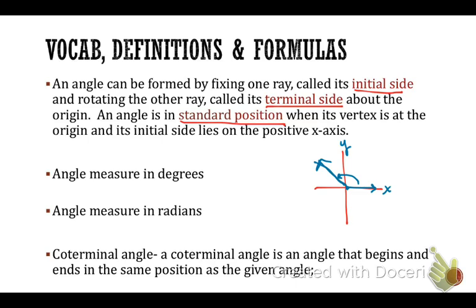In trigonometry, we can measure angles in degrees as we've done before. I'm also going to show you how to measure angles in radians, or how to convert from degrees to radian measure. We also have something called coterminal angles — a coterminal angle is an angle that begins and ends in the same position as a given angle.